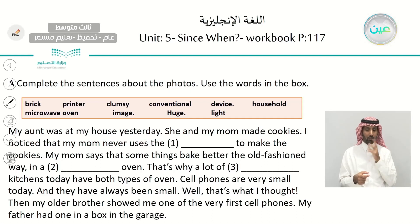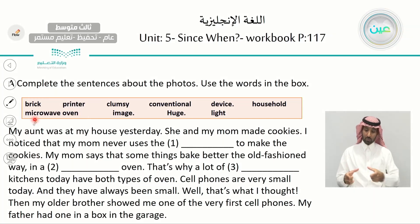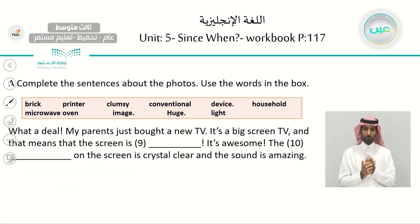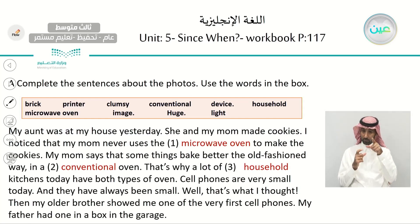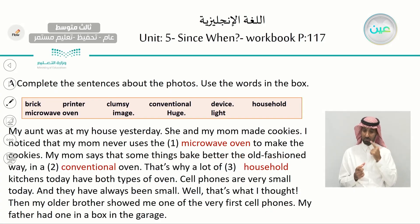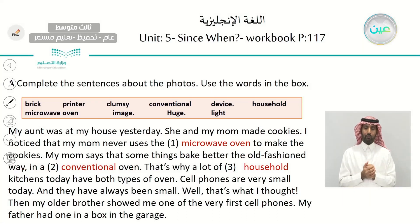What do you think we should put here to make the cookies? Excellent — microwave oven. So we will put it here. If you haven't done the homework, please pause the video and do the exercise on your own. Try to fill in the blanks on page 117. My mom says that some things bake better the old-fashioned way in a conventional oven. Here we put 'conventional,' which means traditional. That's why a lot of household kitchens today have both types of oven.